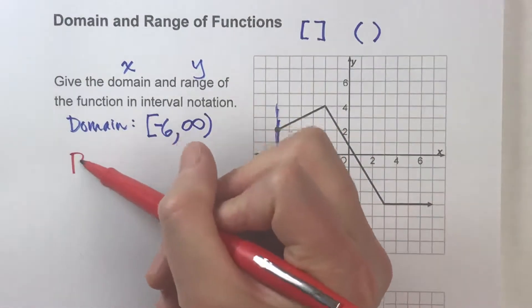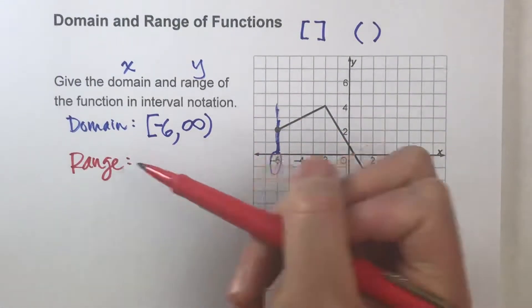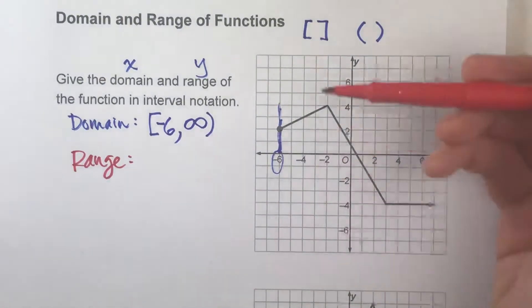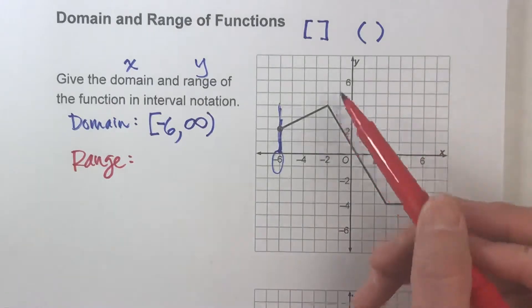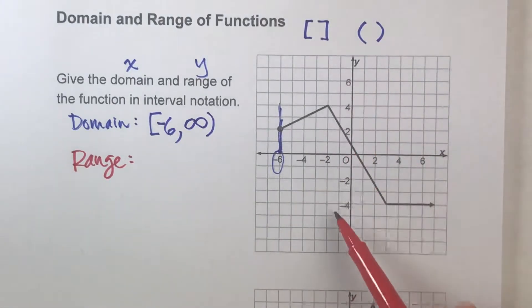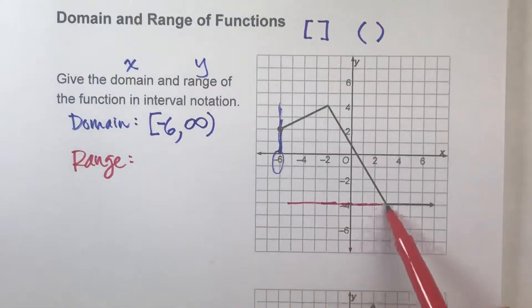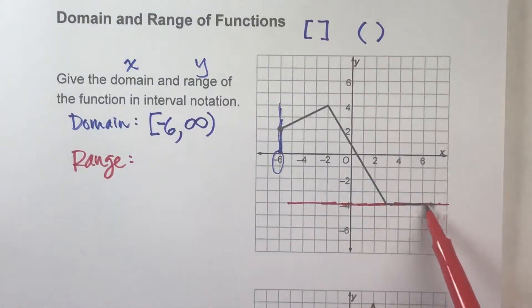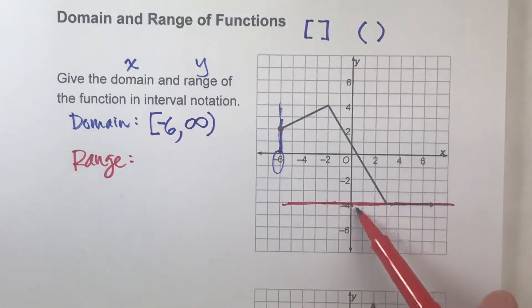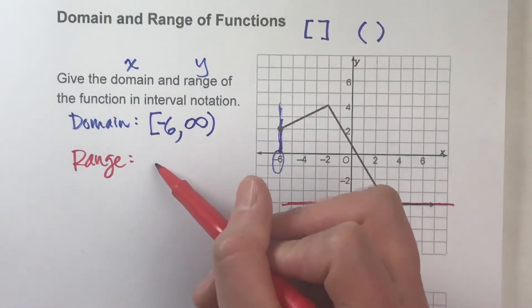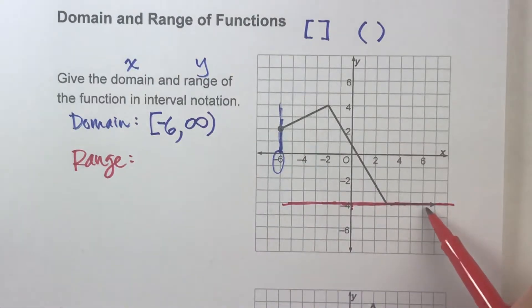All right, so now let's talk about the range. So for the range, we are going to talk about the vertical, the y values. And if you look here, what's the smallest y value it can be? So notice down here, at this point of the function, it goes flat. So this looks like it's the lowest place the function can be. So negative 4 seems like it's the smallest. Now, can it be negative 4?